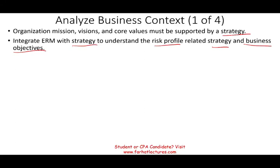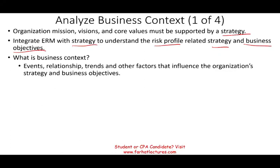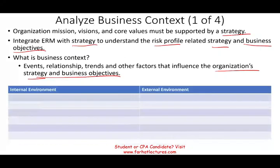The first thing we need to do is understand what is a business context. Simply put, every business functions in a certain environment — it could be risky or not so risky, stable or not so stable. Business context refers to events, relationships, trends, and other factors that influence your organizational strategy and business objectives. There are many factors that could influence the organization's strategy, and some of these factors are internal while some are external.